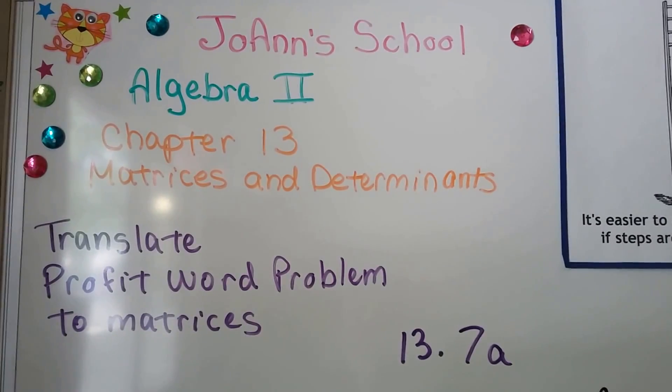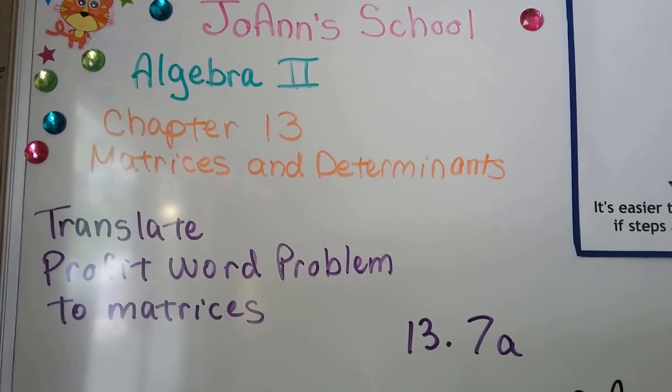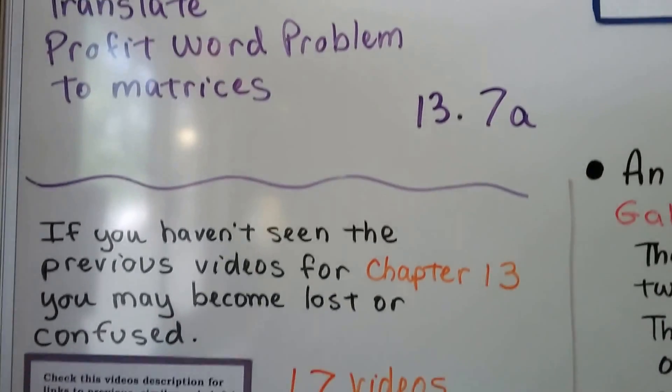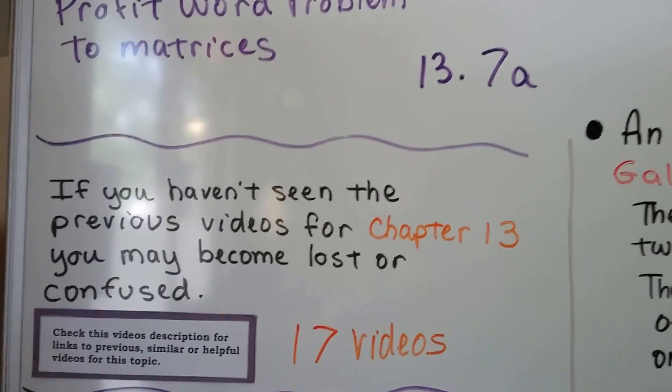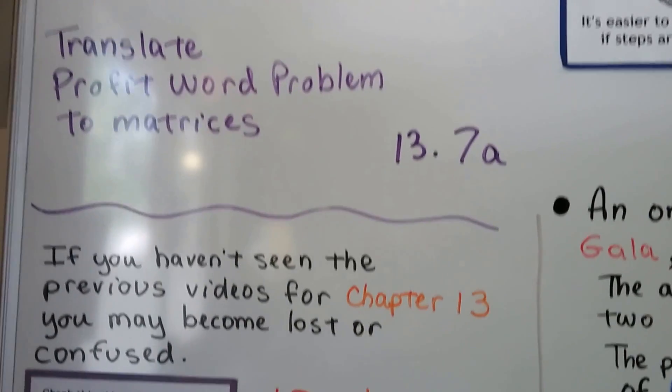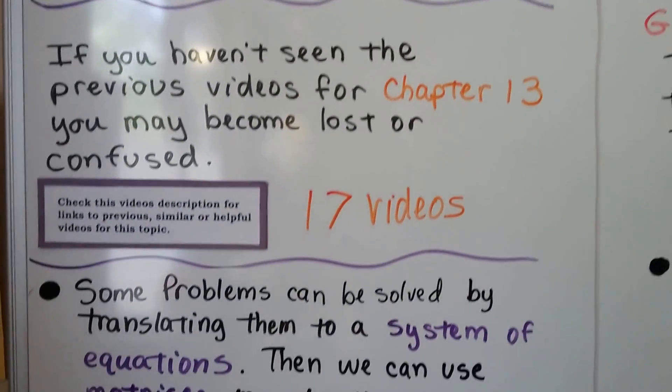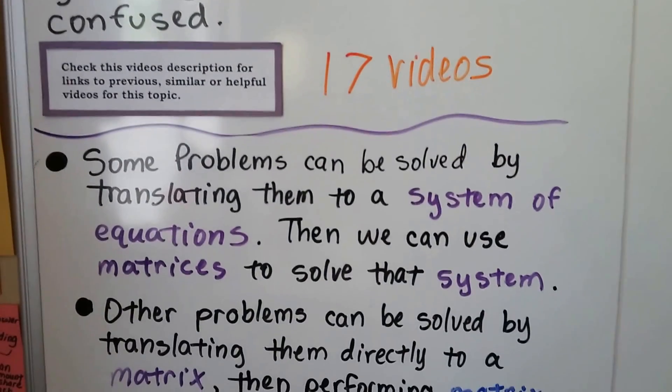We're going to translate a profit word problem to matrices. We're at 13.7a. We have 17 previous videos all about matrices and determinants for Chapter 13. If you've become lost or confused, just click in the description to watch what you've missed.